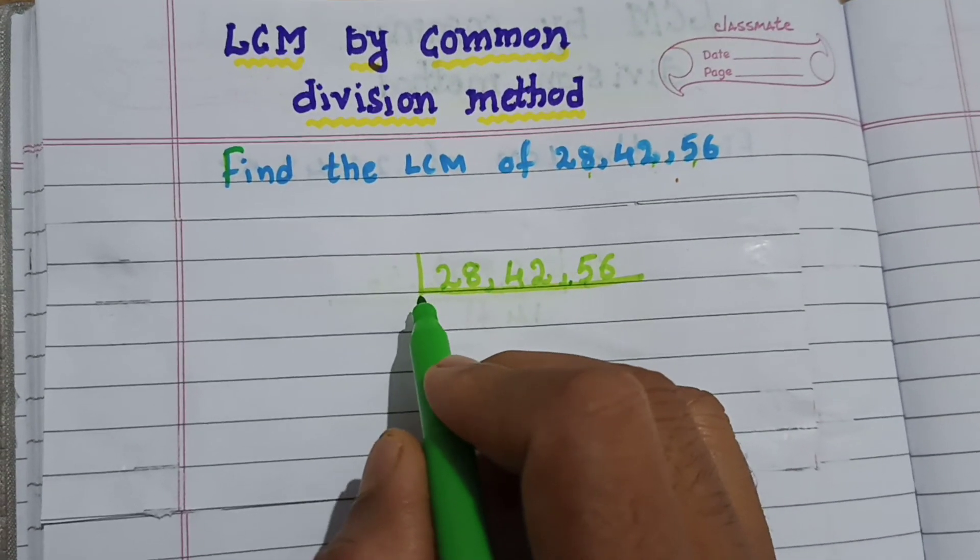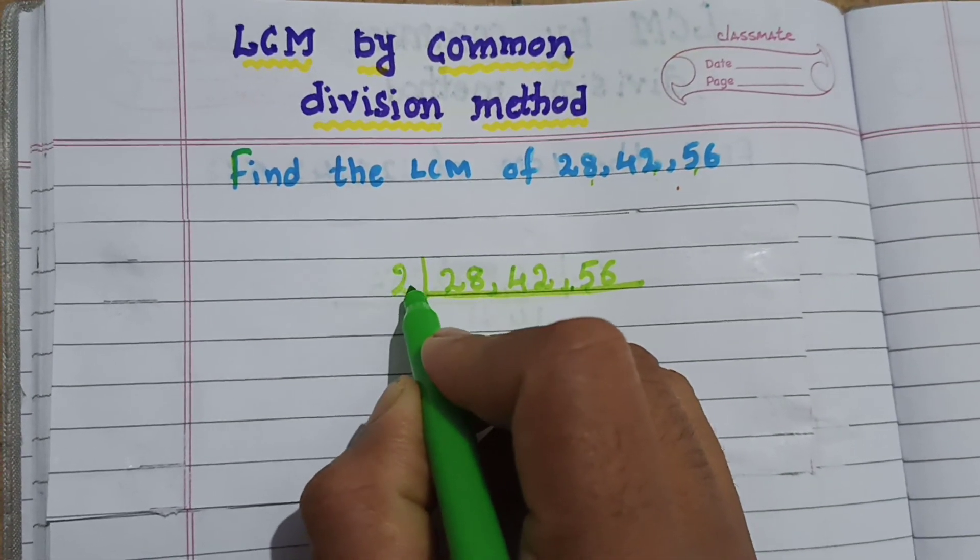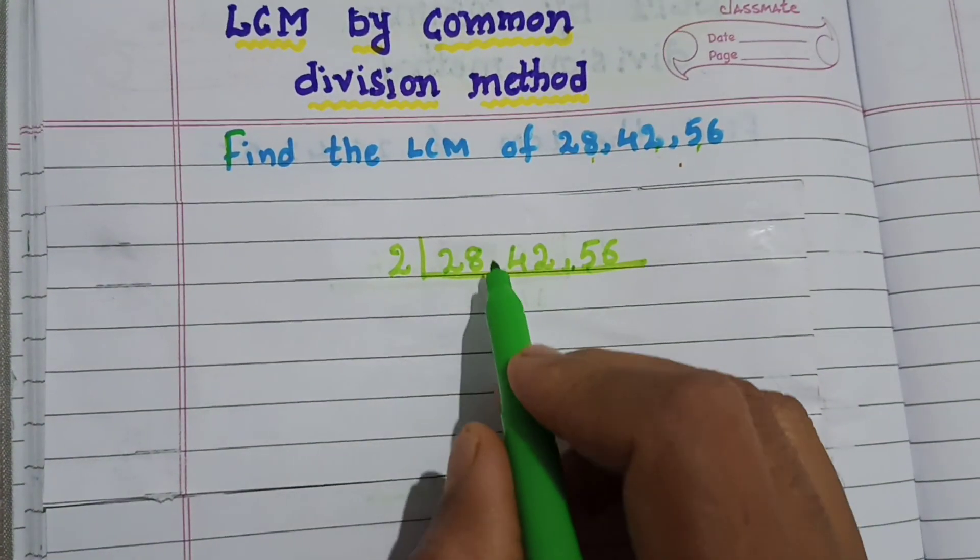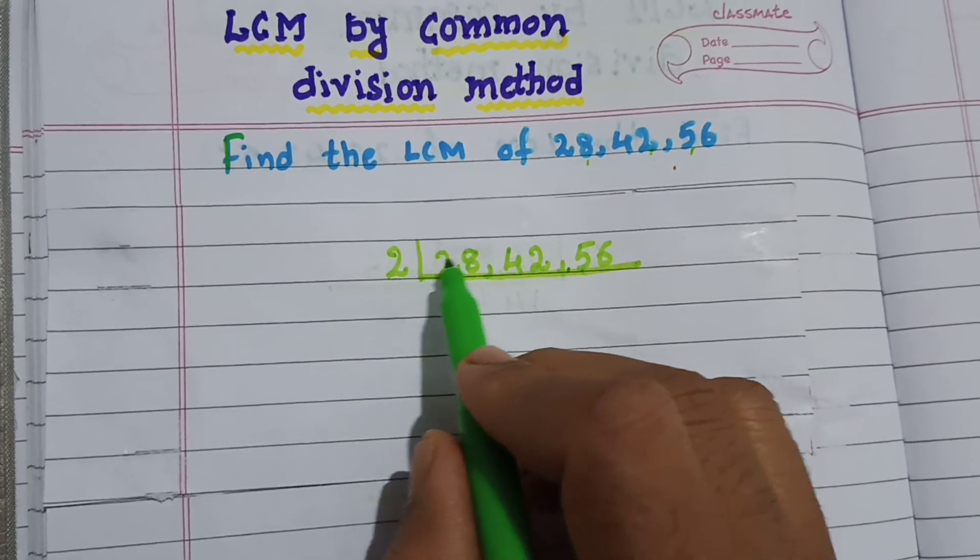Now, let us take the least possible prime number, which is 2. Now, divide the given numbers by the least possible prime number.